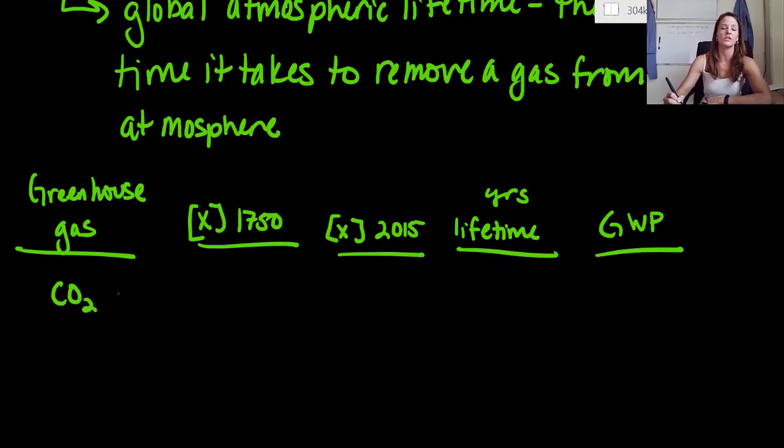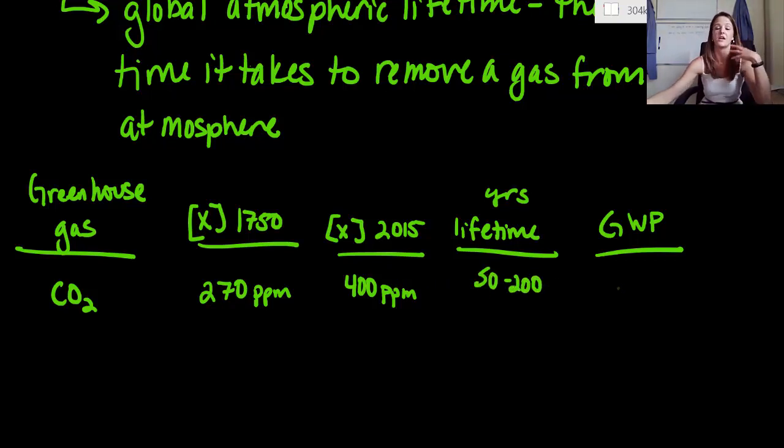The first one we talk about is always carbon dioxide. This is the one we compare all the other molecules to. The concentration of carbon dioxide in 1750 was around 270 ppm. Right now it's actually just reached 400 ppm, which happened about three months ago. Carbon dioxide can last anywhere between 50 to 200 years in our atmosphere depending on what it interacts with. Our GWP for carbon dioxide is 1. This is what we compare everything to.